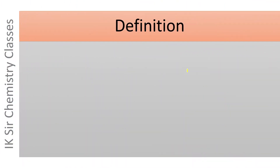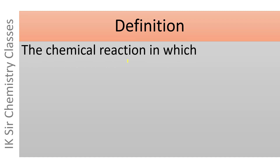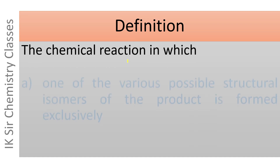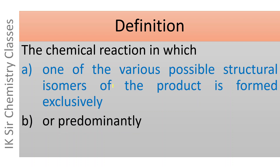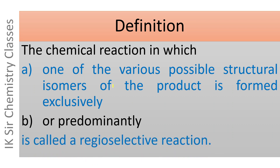First of all, let us see what is the definition of a regioselective reaction. The chemical reaction in which one of the various possible structural isomers of the product is formed exclusively or predominantly is called a regioselective reaction.